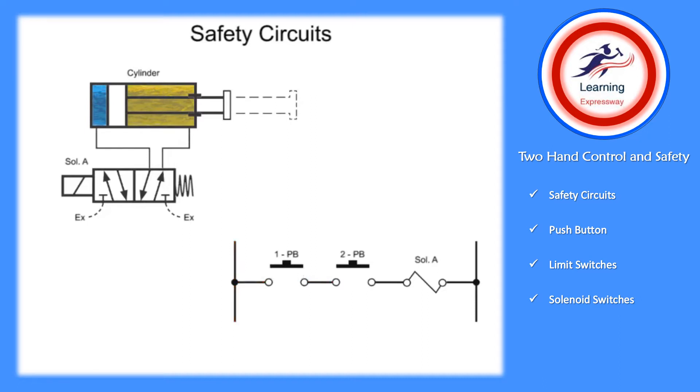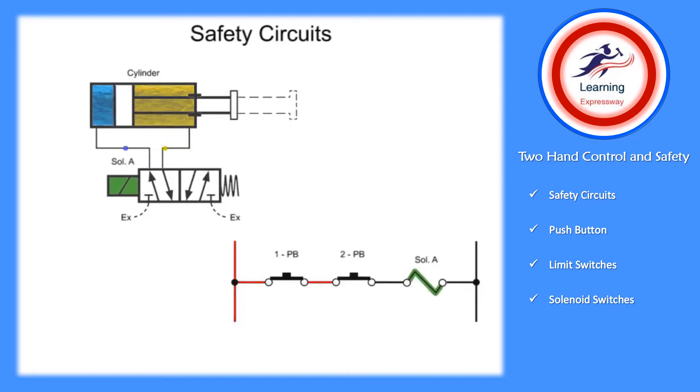As shown in the circuit, only the actuation of both push buttons allow the solenoid to energize. The solenoid then shifts the valve to allow air into the cylinder, which produces the machine's stamping motion.